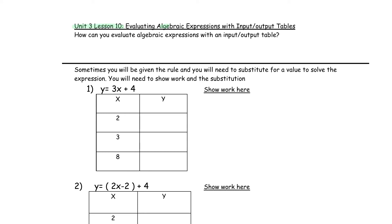Unit 3, lesson 10: evaluating algebraic expressions with input-output tables. How can you evaluate algebraic expressions with input-output tables? You may have seen an input-output table in elementary school. Basically, all it is is you're going to be putting numbers into a problem, solving, and getting an answer. Sometimes you will be given the rule and you will need to substitute for a value to solve the expression. You will need to show work and the substitution. When we talk about input-output, the letter x is going to be your input and the letter y is going to be your output.